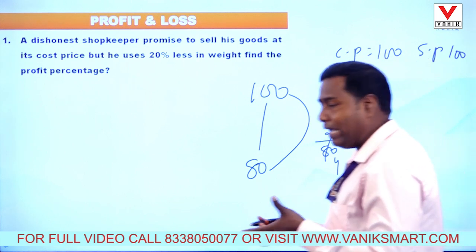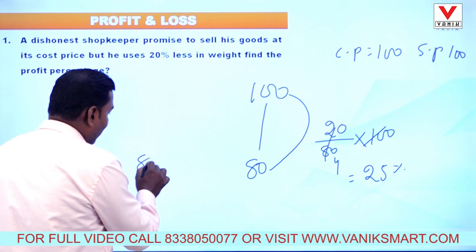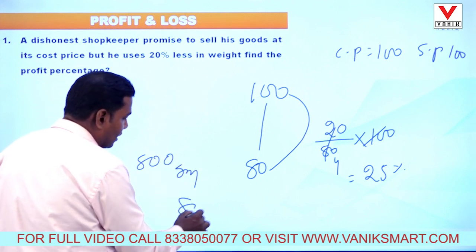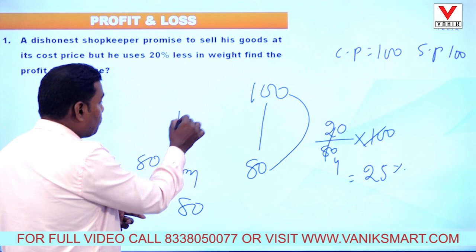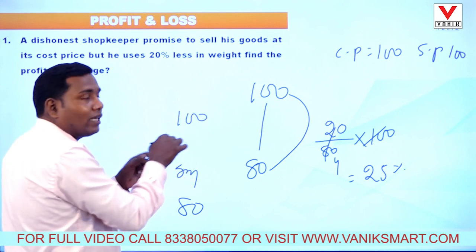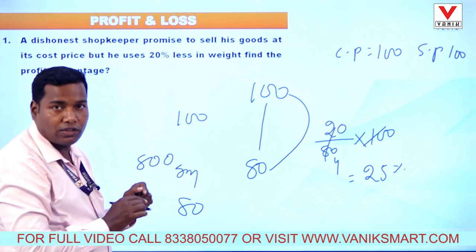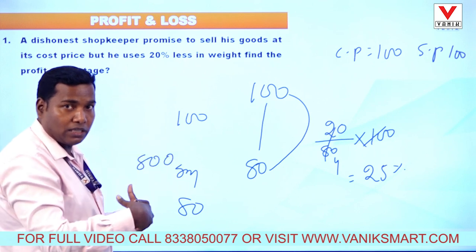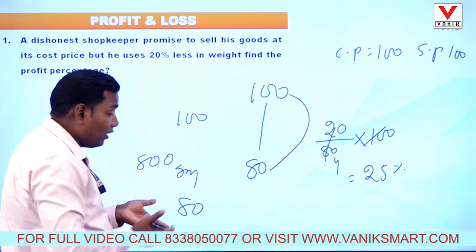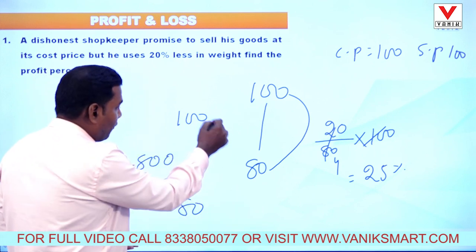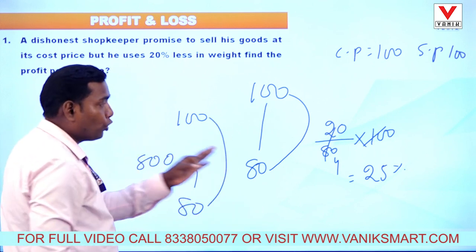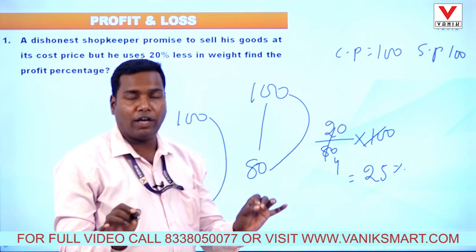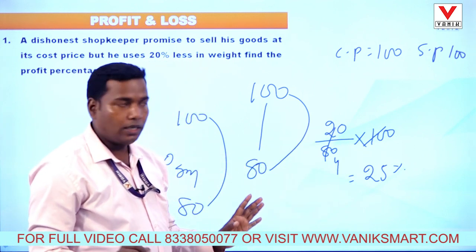He sells 800 grams of sugar — 800 grams at 80 rupees cost — and collects 100 rupees for 1 kg price. He gives 80 rupees worth of goods but collected 100 rupees, so profit is 20 rupees. Profit percentage = 20/80 × 100 = 25 percentage.